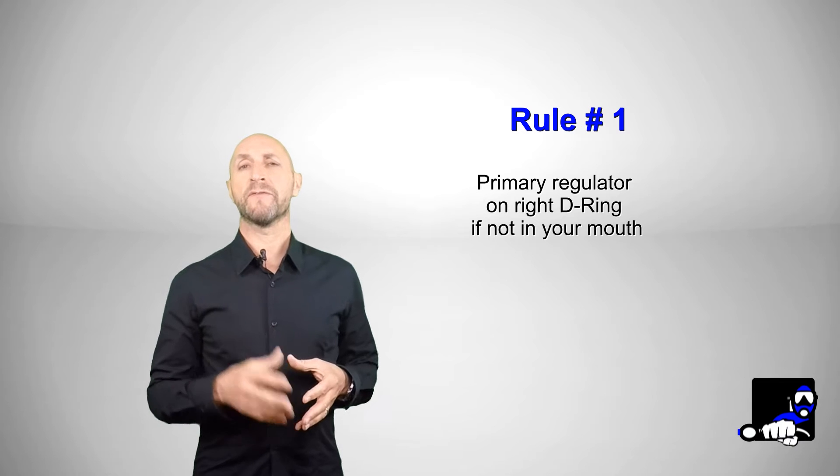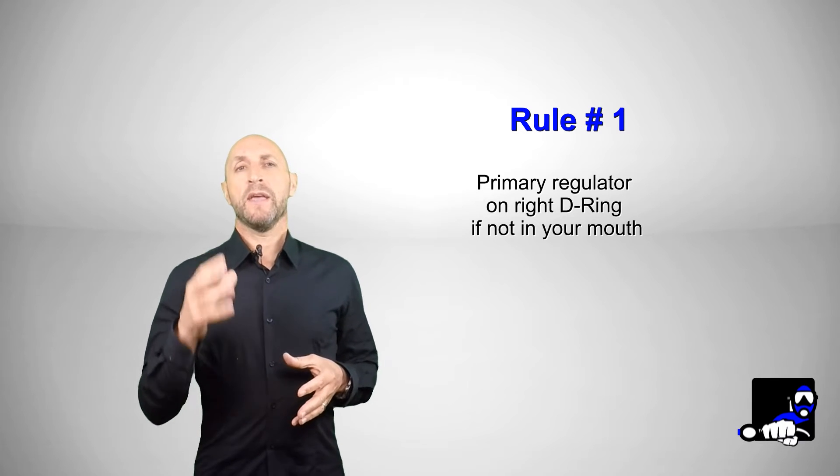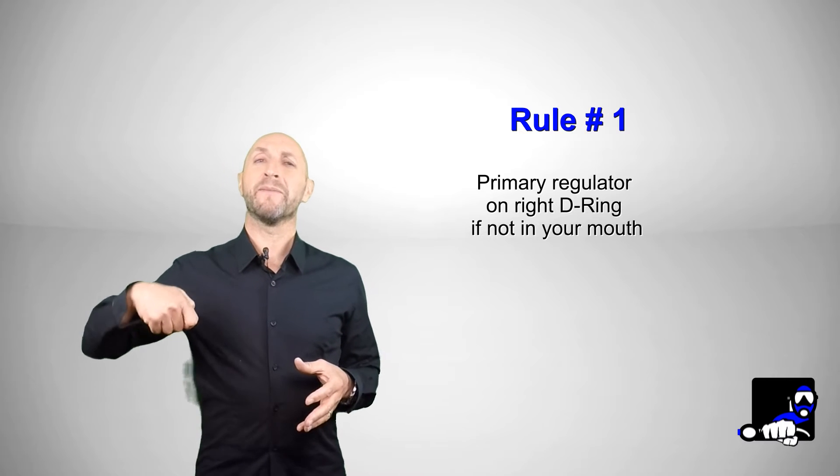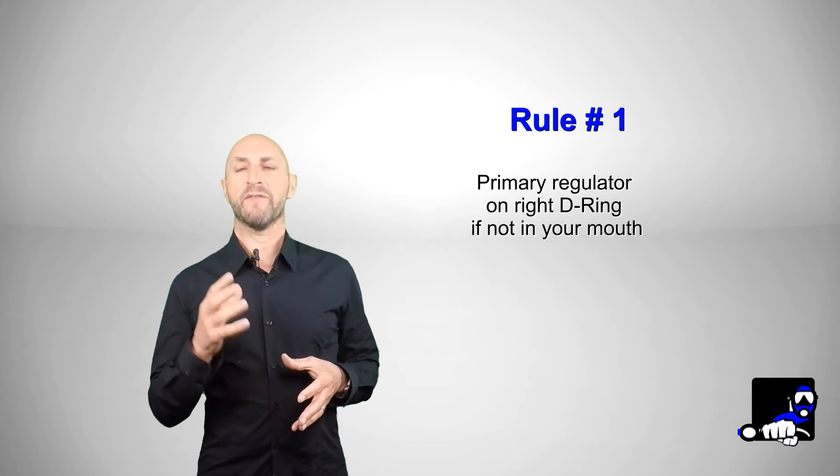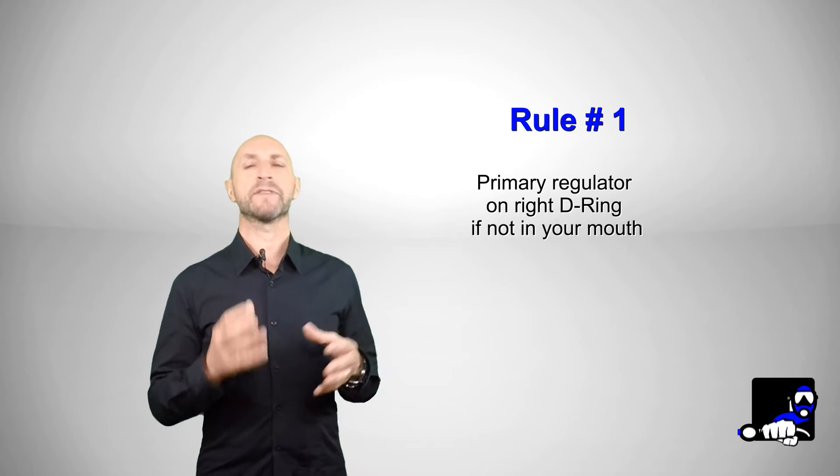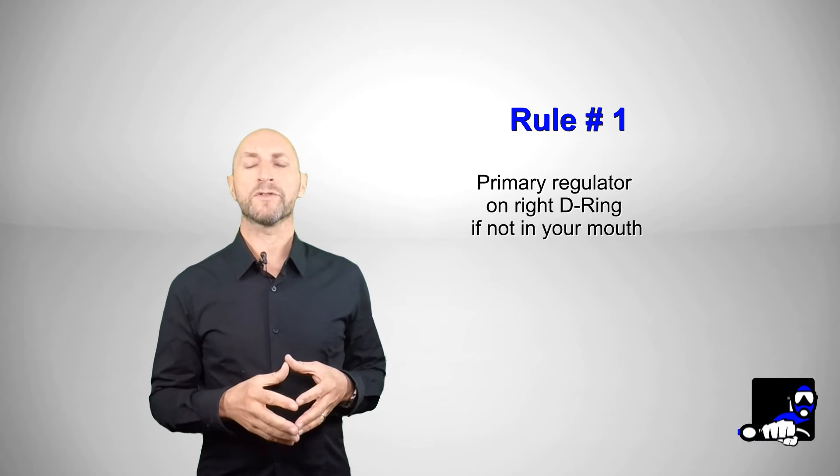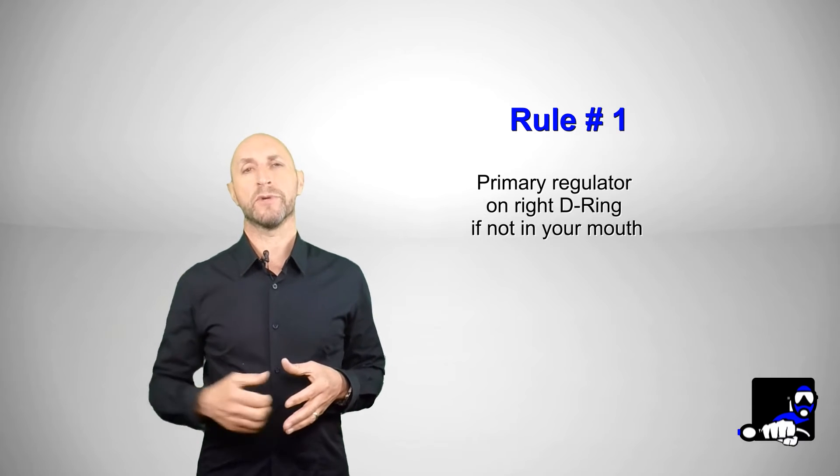The first rule says: D-ring if not in mouth. If the primary second stage regulator is not in your mouth, it has to be clipped on the D-ring in every situation, inside or outside the water. If you are not breathing from the long hose, you have to clip it on the right shoulder D-ring.